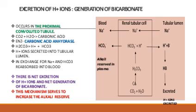The hydrogen ions are excreted in the urine. There is net excretion of hydrogen ions and a net generation of bicarbonate in the plasma, meaning the bicarbonate has been conserved in the plasma. This serves to increase the alkali reserve.